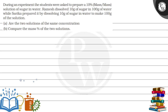Are the two solutions of the same concentration? Compare the mass percentage of the two solutions. The answer is no — they are not the same concentration. Sarika has the higher mass percentage. We will discuss why further.